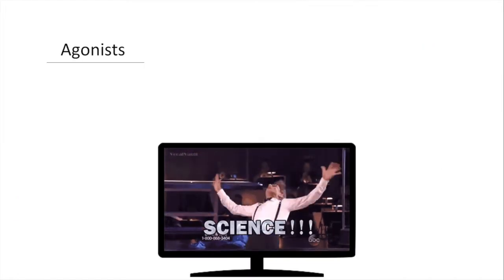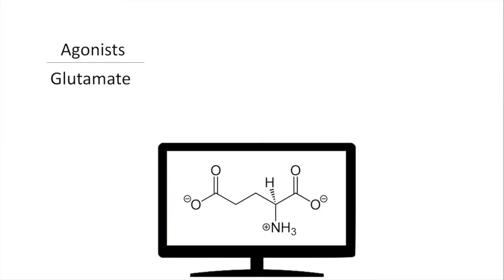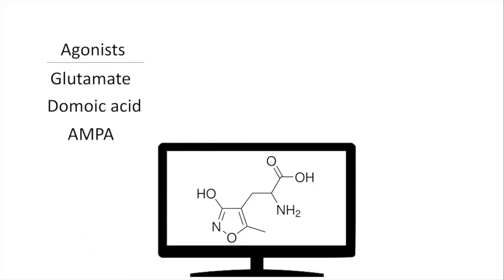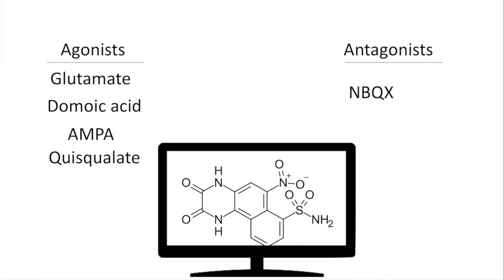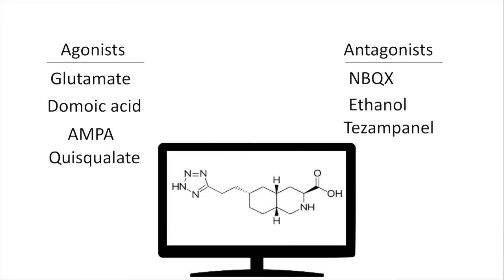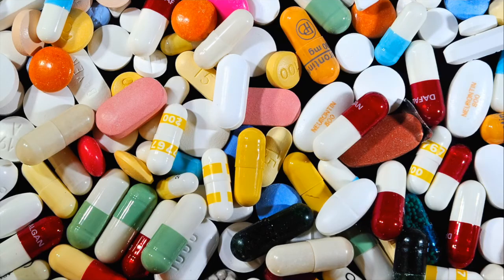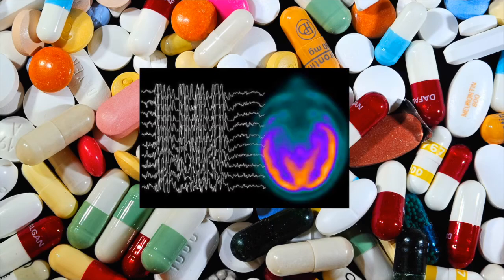Agonists of AMPA receptors are glutamate, domoic acid, AMPA, and quisqualate. Antagonists include NBQX, ethanol, and talampanel. Interestingly, AMPA receptor antagonists are anticonvulsants used in patients with epilepsy in the treatment of partial onset seizures.